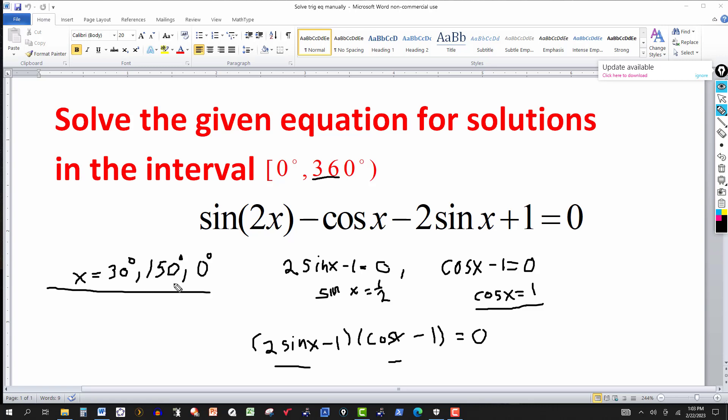Now, if they tell you you want the answer in radians, then you could easily find the answer in degrees and multiply each of these by pi over 180 degrees. And the degrees would cancel with the 30 to 150. And of course, the answer would come out in terms of pi.